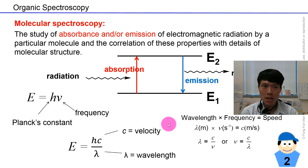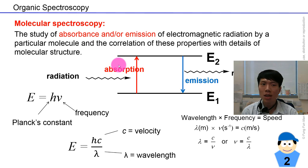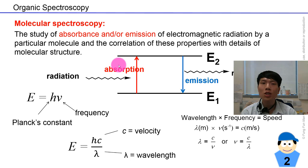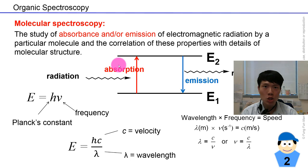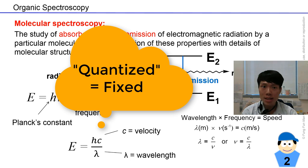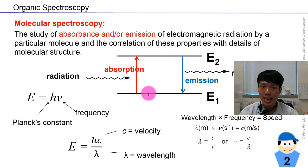In organic spectroscopy, first of all, we need to define the terms. What is spectroscopy? It is the study of absorbance and/or the emission of electromagnetic radiation by a particular molecule, and the relationship of these properties with the details of the chemical structures of these molecules. When you shine a beam of light — whatever kinds of energy — the molecule will absorb this quantized amount of energy and undergo a transition from a lower energy state to a higher energy state. This is what we call absorption.